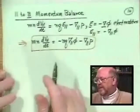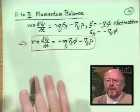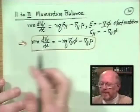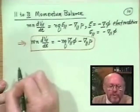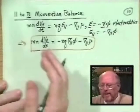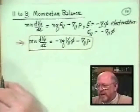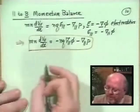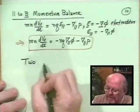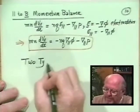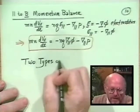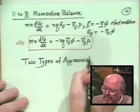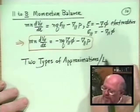This is our momentum balance equation, and we're going to discuss a particular set of approximations applied to it. There are two basic approximations — or limiting cases. One is called adiabatic and the other is called fluid. We'll keep coming back to this shorthand.